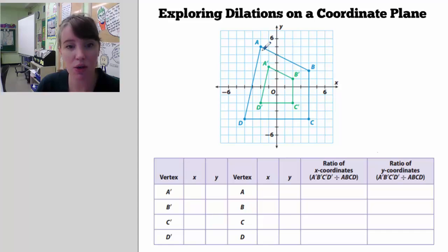So let's get the coordinates of each. So A was negative 2, 5, B was 4, 2, C was 4, negative 4, and D was negative 4, negative 4.